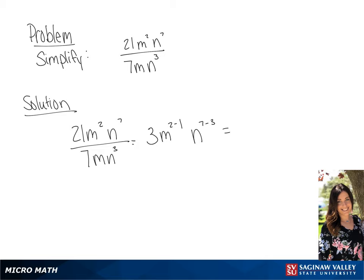The bases that are alike we can subtract their exponents. So we have 3m to the 2 minus 1, n to the 7 minus 3. Our final answer is going to be 3mn to the 4th power.